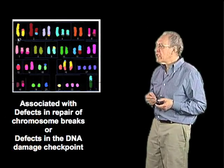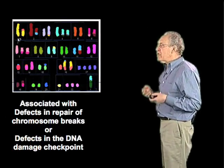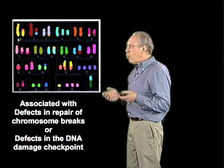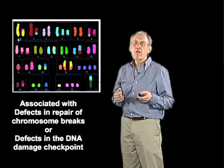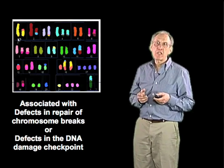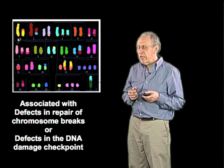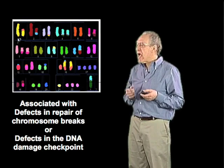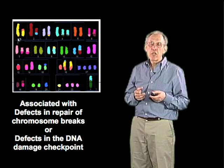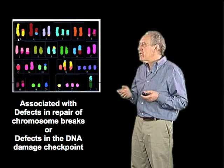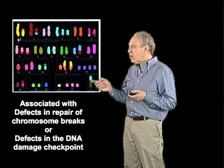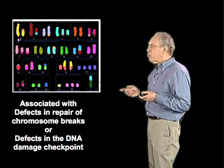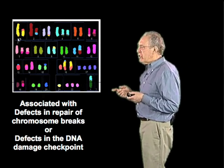What's clear about all of these defects is that normal cells have very accurate mechanisms to repair DNA damage. And it is really in the absence of the repair of that damage that we see the kind of karyotypes illustrated with this tumor suppressor gene.